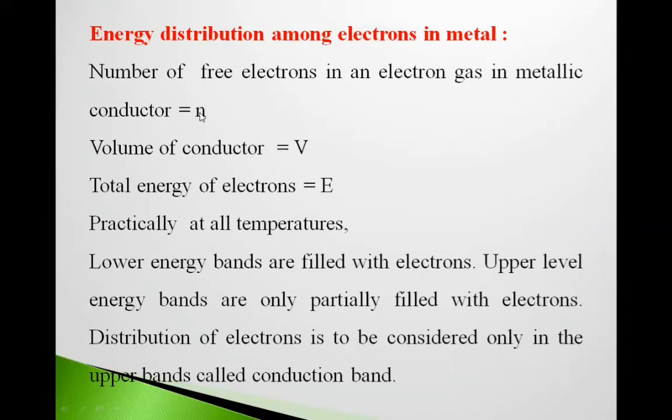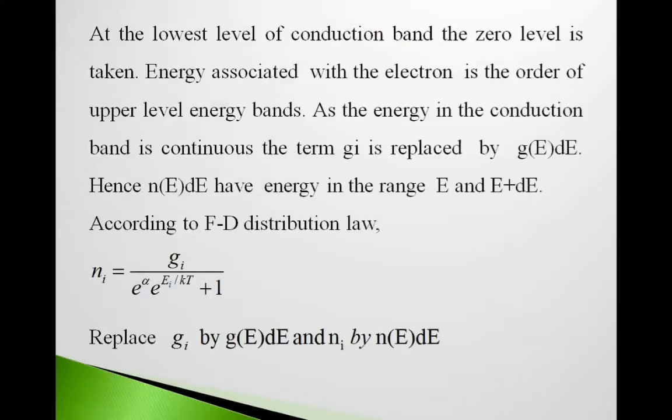N is number of electrons in electron gas in metallic conductors, V is volume of the conductor, capital E is total energy of electrons. At all temperatures, lower energy bands are completely filled and upper level energy bands are partially filled with electrons. We have to deal with these upper level bands, conduction bands. At the lowest level of conduction band, the zero level is taken.